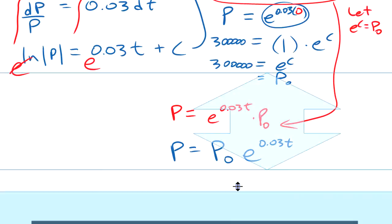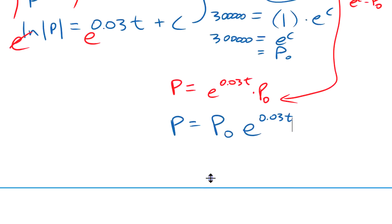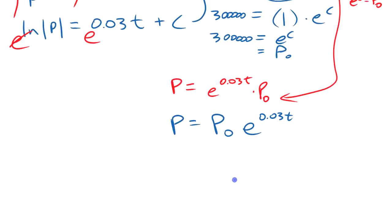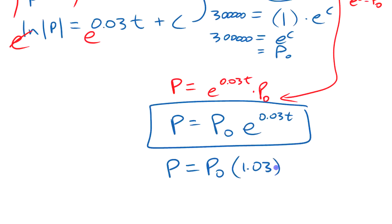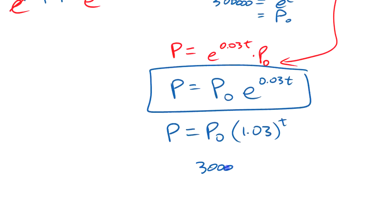Population is P₀e to the 0.03t. Now that looks a bit different than you might have used in previous math courses, because the way you might have modeled this in previous math courses is not with that base e thing there. What you might have done is you might have said P equals P₀ times 1.03 to the power of t. If something was growing, if it was 300,000 and growing at 3%, you might have said 300,000, 1.03 to the t. Whereas here we're saying 300,000, and we're doing e to the 0.03t, if you look at it that way.